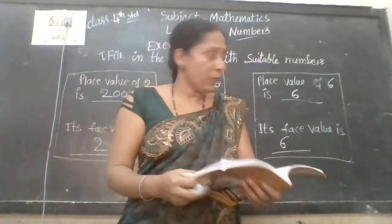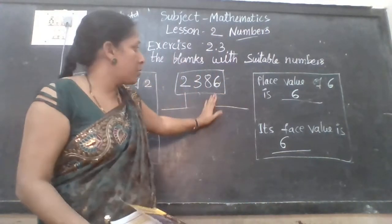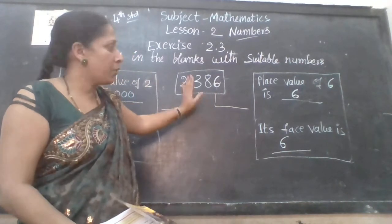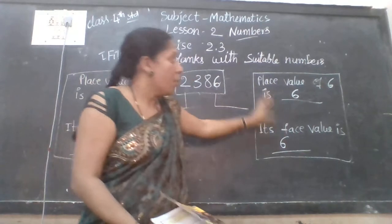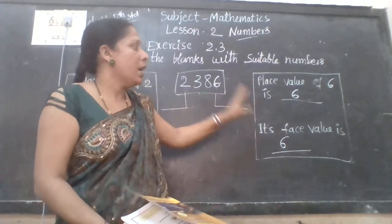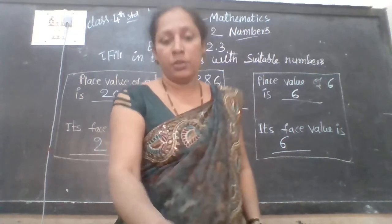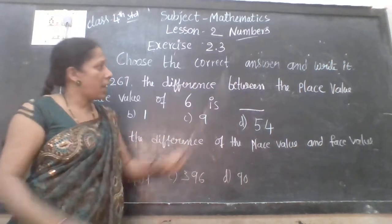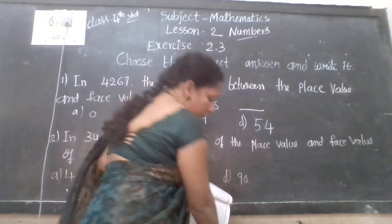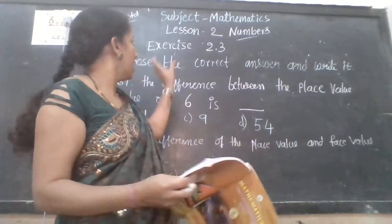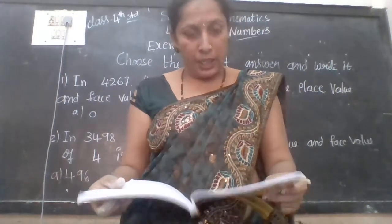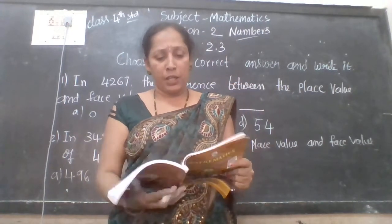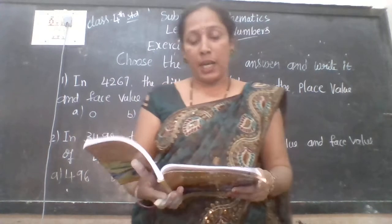Understood? Did you understand? First, observe the number and the arrow mark, whatever they have given. After that, read carefully — place value or face value, whatever is given — and write it. Understood, children? Choose the correct answer and write it. They have given question number 30. For each question given below, four alternatives are given. Choose the correct answer and write it.